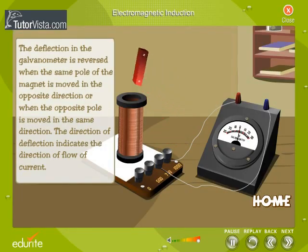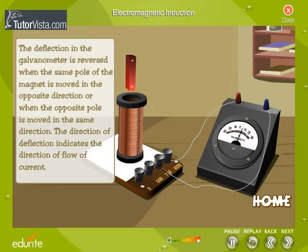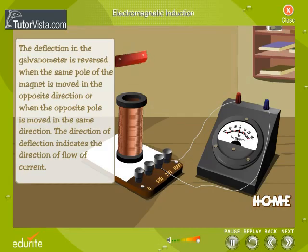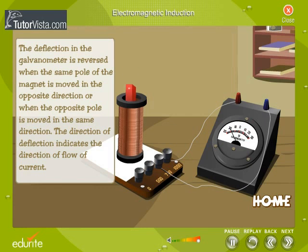The deflection in the galvanometer is reversed when the same pole of the magnet is moved in the opposite direction, or when the opposite pole is moved in the same direction. The direction of deflection indicates the direction of flow of current.